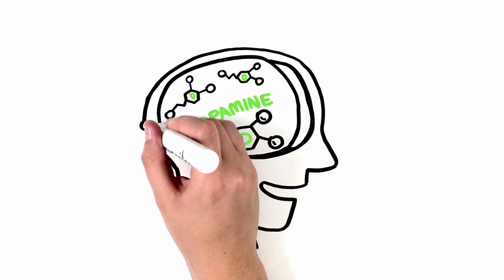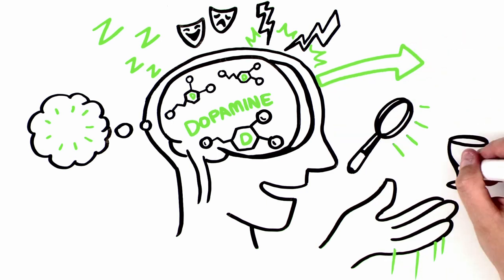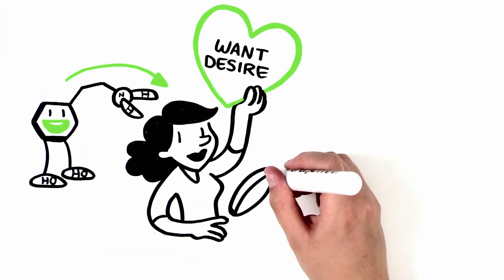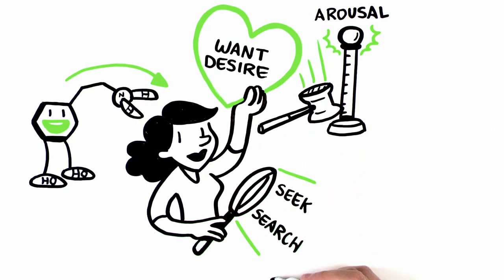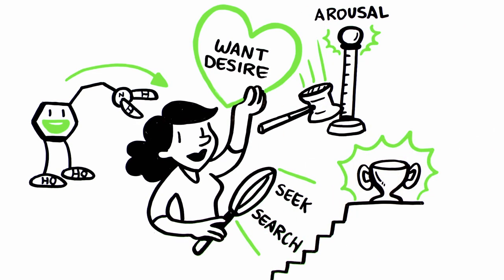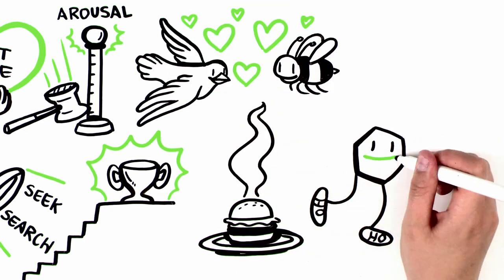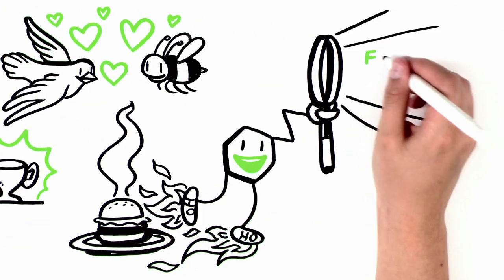Dopamine is critical in all sorts of brain functions including thinking, moving, sleeping, mood, attention, motivation, seeking, and reward. Dopamine causes us to want, desire, seek out, and search. It increases our general level of arousal and our goal-directed behavior. It's not just about physical needs such as food or sex, but also about abstract concepts. Dopamine ignites curiosity and fuels our searching for information.